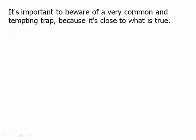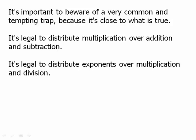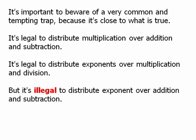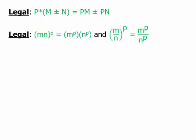It's important to be aware of a very common and tempting trap. It's legal to distribute multiplication over addition and subtraction — that's 100% legal. It's legal to distribute exponents over multiplication and division — that's also 100% legal. But it's illegal to distribute an exponent over addition and subtraction. That is always illegal.